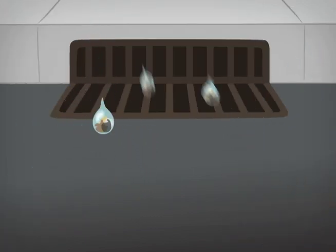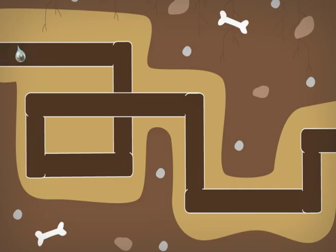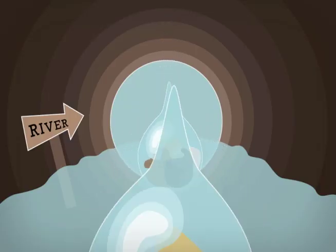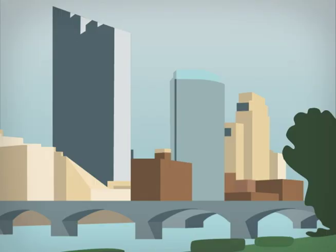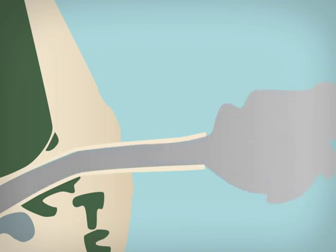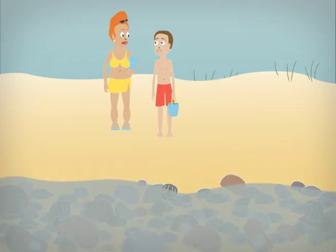This stormwater runoff flows into storm drains, where it travels through underground pipes that in most communities feed directly into rivers and lakes. In Grand Rapids, it takes just 15 to 30 minutes for runoff from your driveway to reach the Grand River, and from there, it's on to Lake Michigan with all the pollutants it picked up along the way.